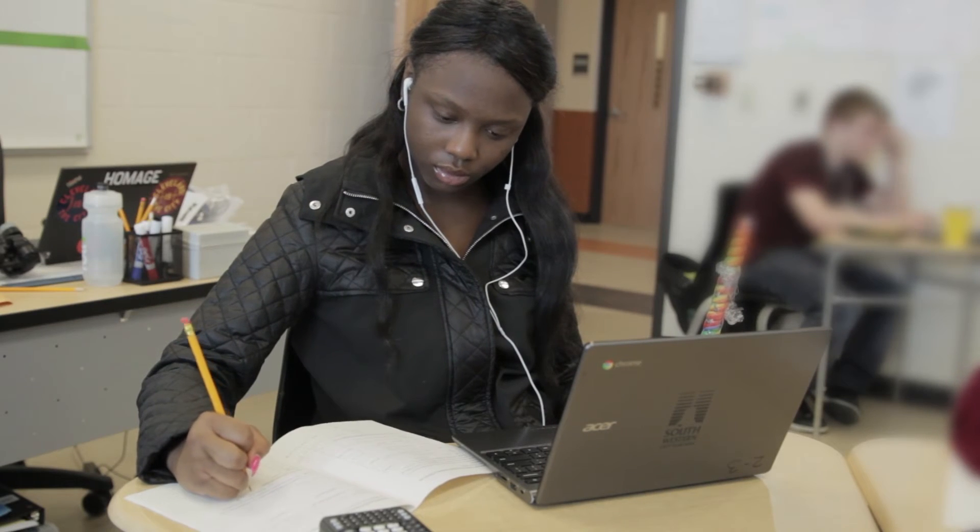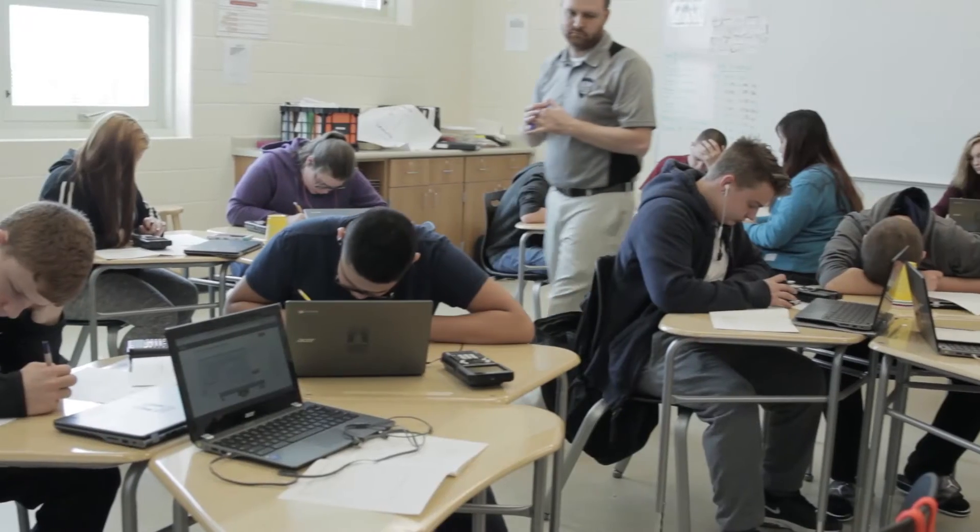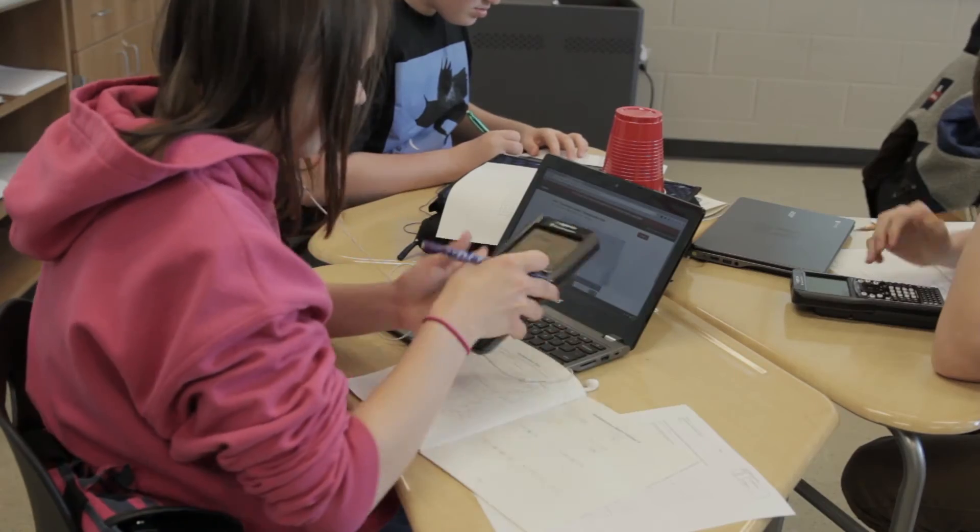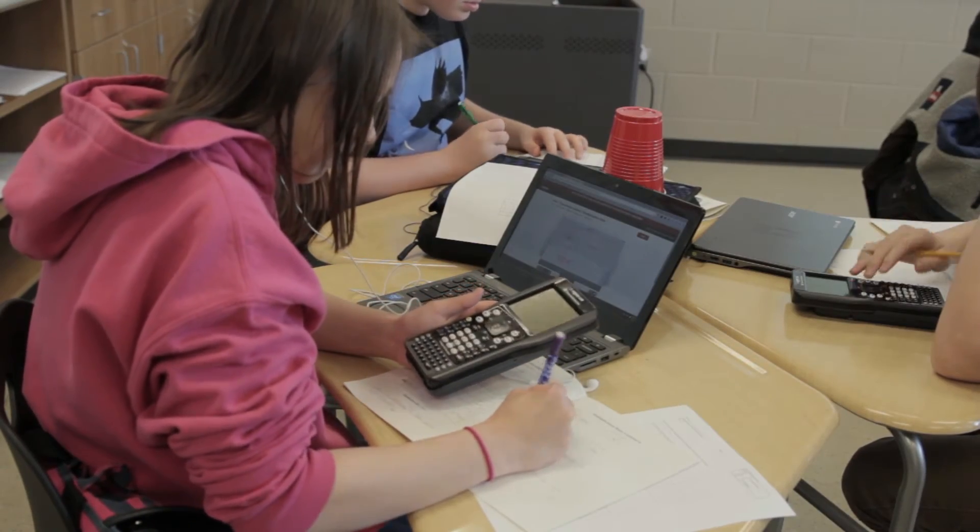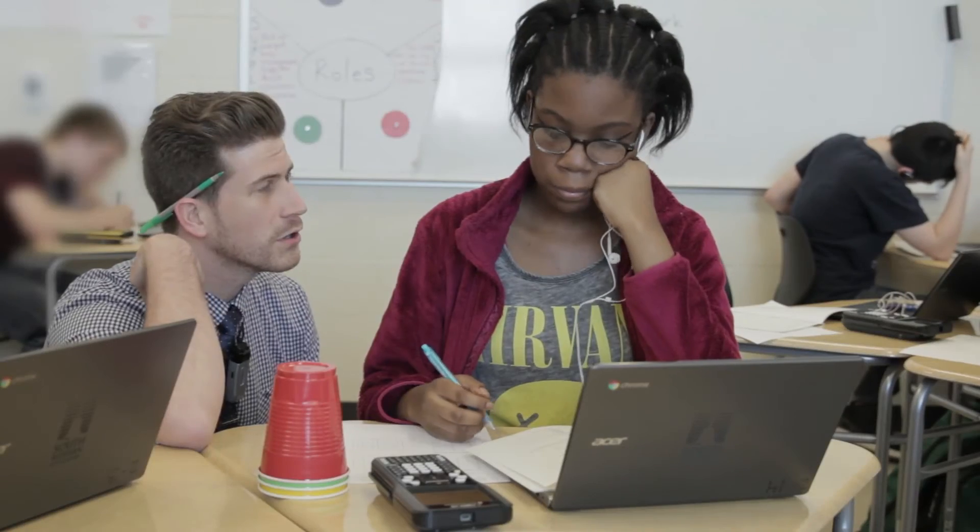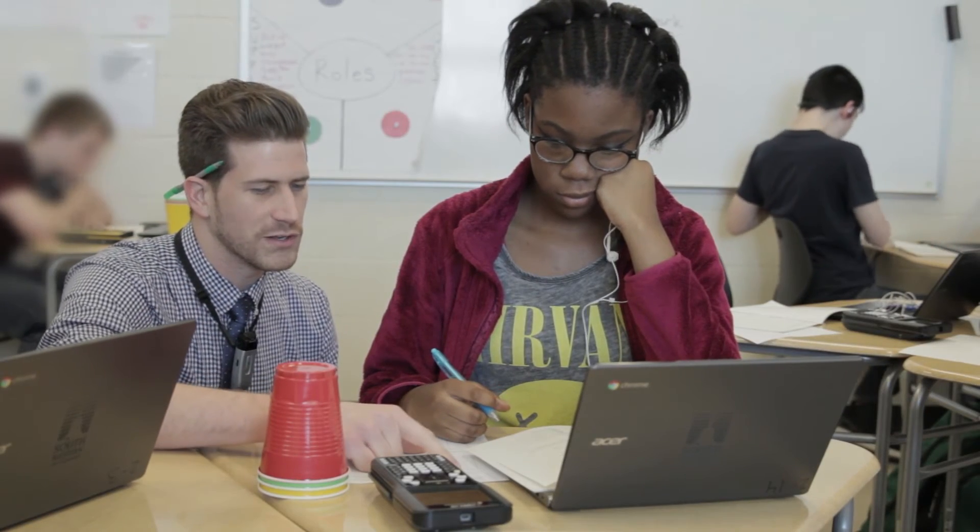So while they're watching it then there's also questions in the video. We find out as teachers if they're learning it and then I also have the cup system. There's a red, a green, and a yellow cup. It stays on yellow if they're doing fine. They flip it to red if they have a question and they want me or my co-teacher to come answer it. If it's on green that means they're done and they need something checked over.